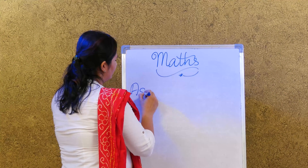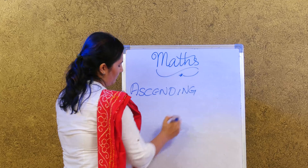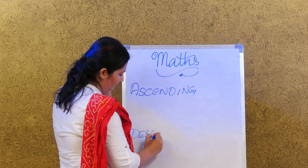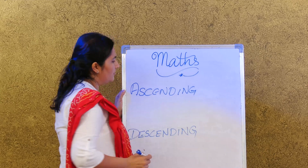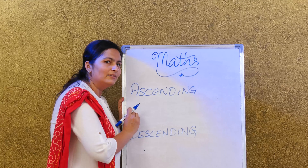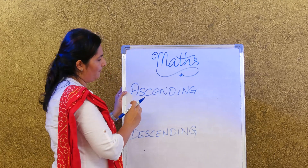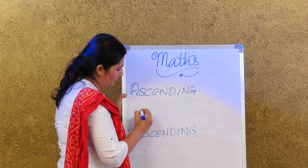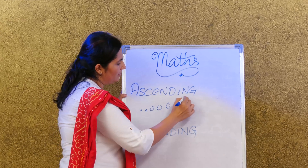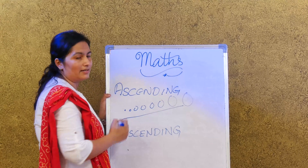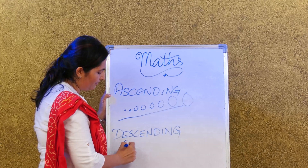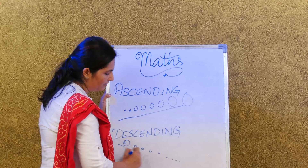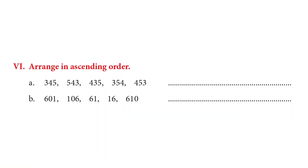Ascending and descending order. Ascending is like climbing stairs — from smallest to largest. Descending is like going down the stairs. For ascending order, the numbers given are 345, 543, 435, 354, and 453. It's a little tricky because every number has a 3, a 4, and a 5 — but it's easy!